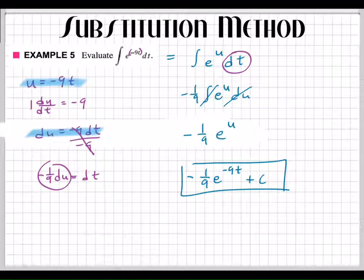All right, there you go, guys. There's your answer. I subbed out the u, got my negative 9t. We're done. Perfect.